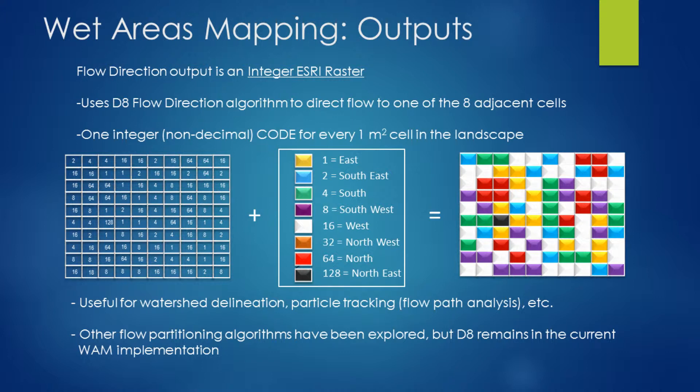This dataset can be very useful for watershed delineation and for particle tracking — flow path analysis. From a watershed delineation perspective, if we know the direction of flow for every one-meter cell, we can very accurately identify watershed boundaries. From a particle tracking perspective, this flow direction informs us — if we spill a bottle of water, have an oil breach, or whatever else — the direction that the flow is going to take.